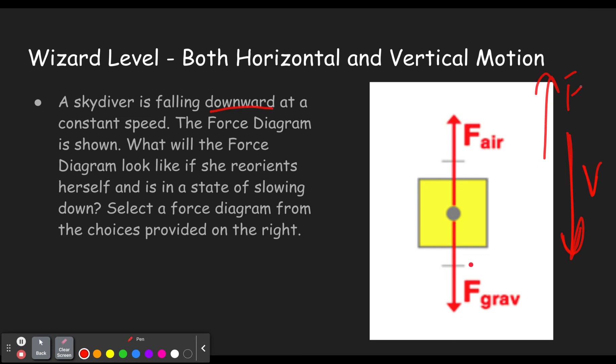So as she reorients herself, when she reorients herself, does she make gravity smaller or does she make the air resistance bigger? Because we know that the extra force has to be up. So let me just draw both of those options. She could make the gravitational force smaller, like that, or she could make the air resistance bigger. Either of these two options has a net force up that would cause it to slow down. But the question is, which of them would really happen?